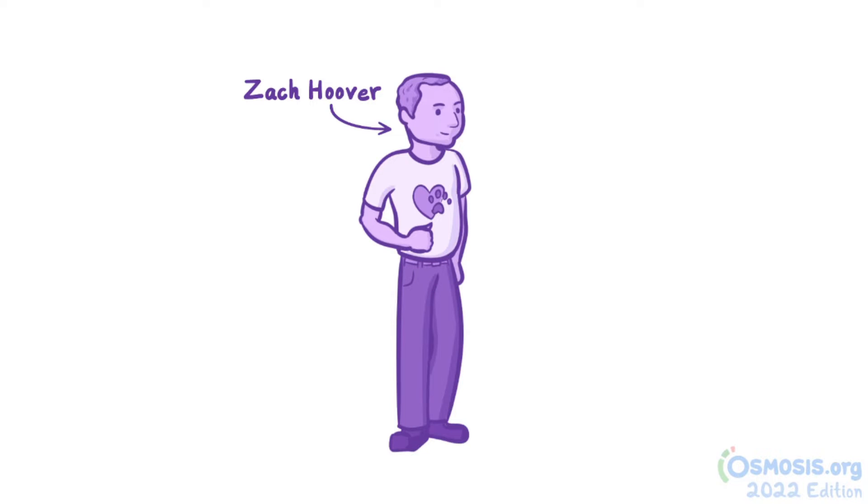Zach Hoover was a 57-year-old man who lived in Montgomery, Alabama. He lived in a small, one-bedroom apartment with his cat, Milo.